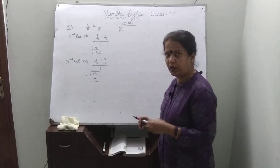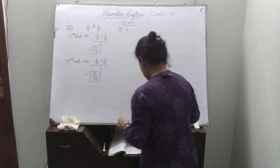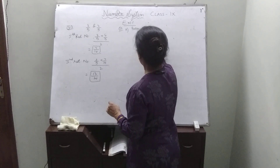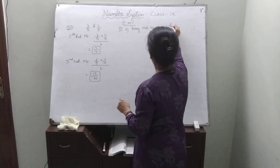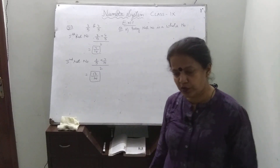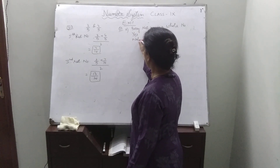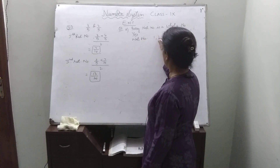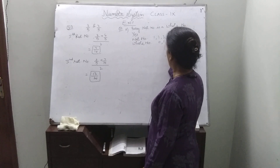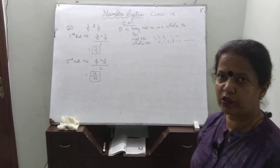Question number 4: You have to give reasoning whether the answer is yes or no. First part — every natural number is a whole number. Are all natural numbers whole numbers? Yes. Because natural numbers start from 1, 2, 3 and so on, and whole numbers are 0, 1, 2, 3 and so on. So all natural numbers come in whole numbers. Therefore, all natural numbers are whole numbers.